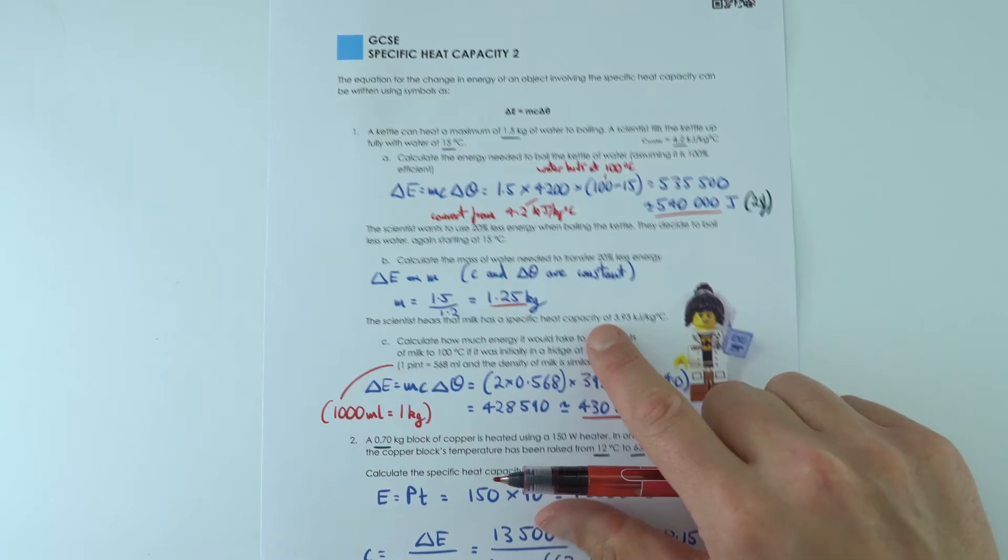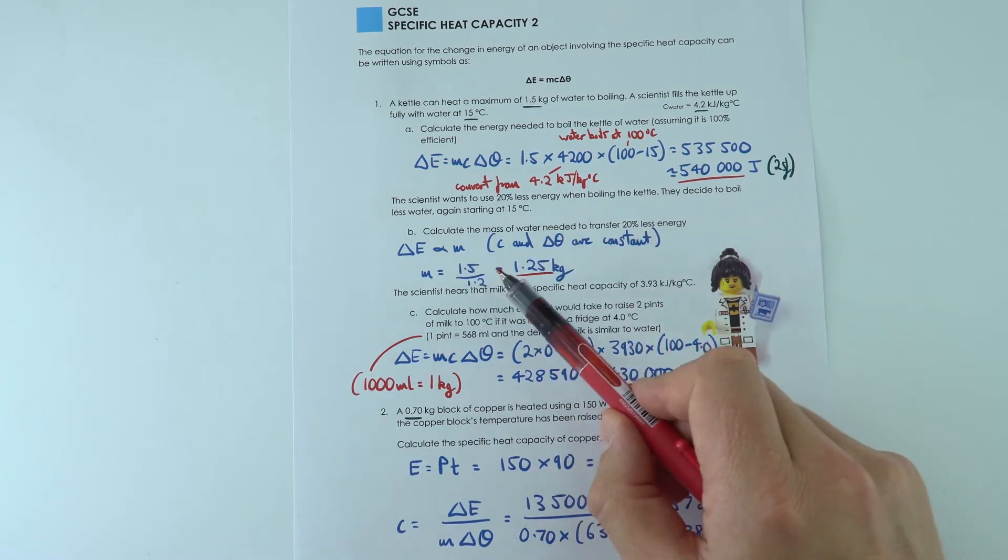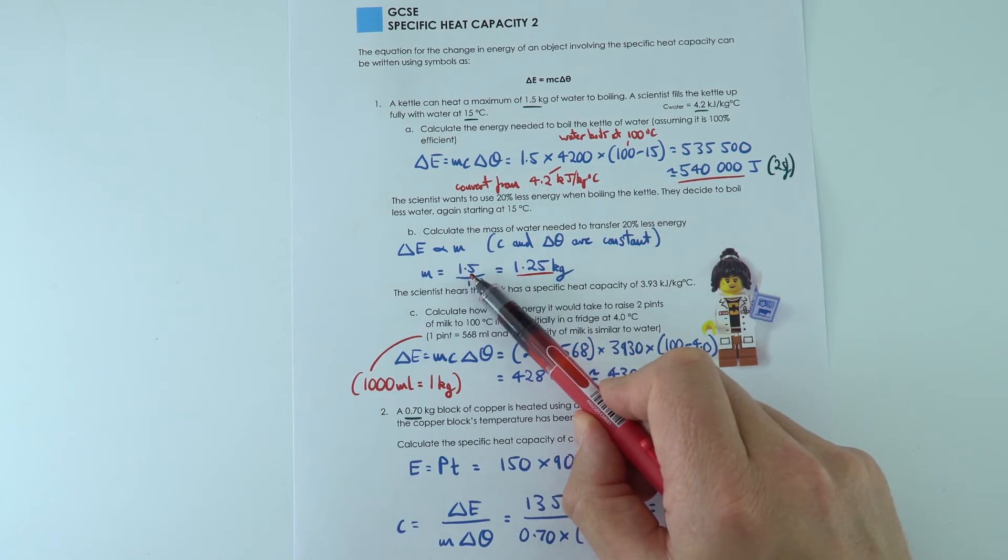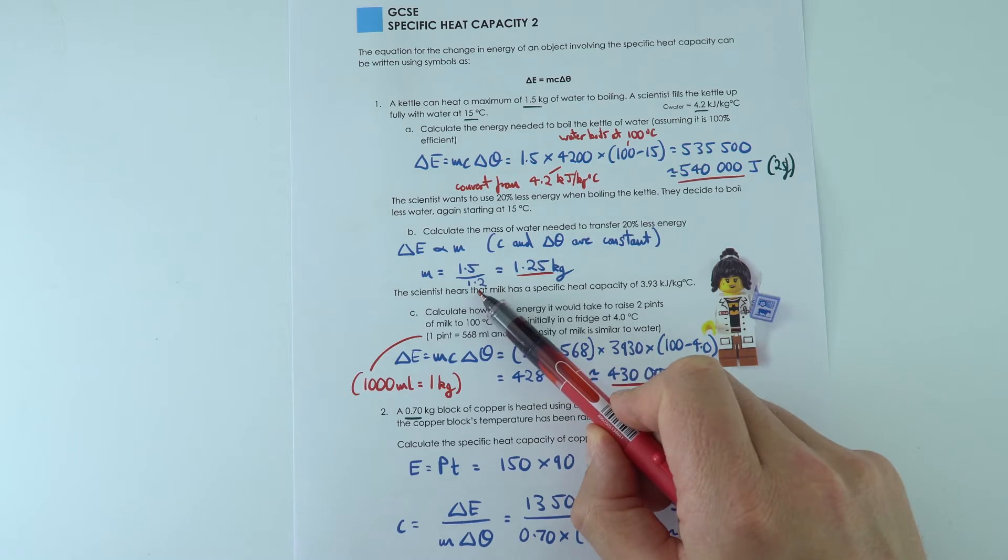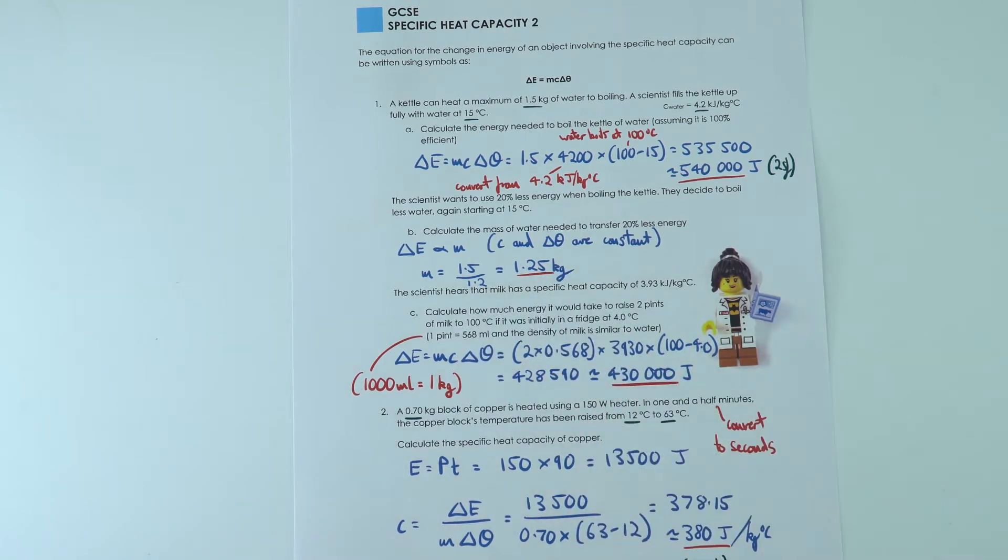The second one, the mass of water needed to transfer 20% less energy. What I've done is divided 1.5 by 1.2. That's how we're going to make it 20% less, which is 1.25.